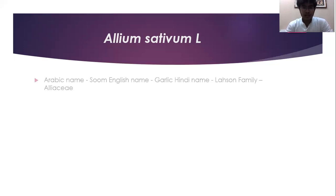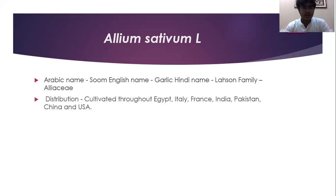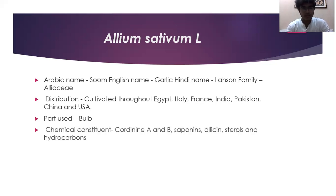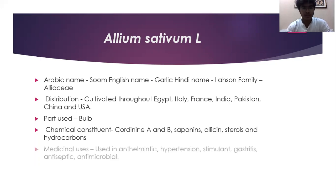The third plant is Allium sativum L. Arabic name: Soam. English name: Garlic. Hindi name: Lahsan. Family: Alliaceae. Distribution: cultivated throughout Egypt, Italy, France, India, Pakistan, China, and USA. Part used: bulb. Chemical constituents: codinines A and B, saponins, allicin, sterols, and hydrocarbons. Medicinal uses: purgative and helminthic, hypertension, stimulant, antimicrobial, and contraceptive.